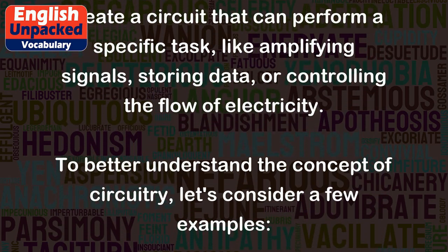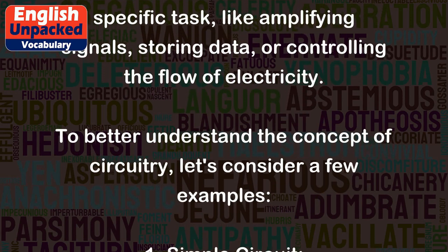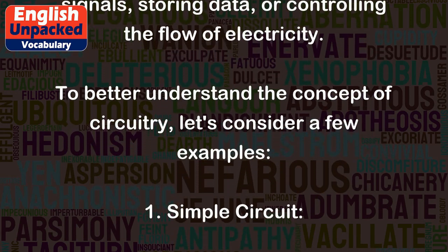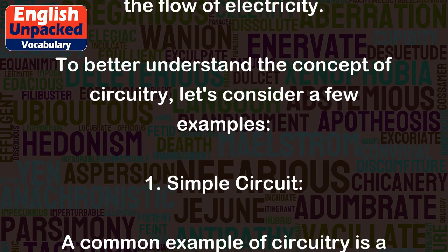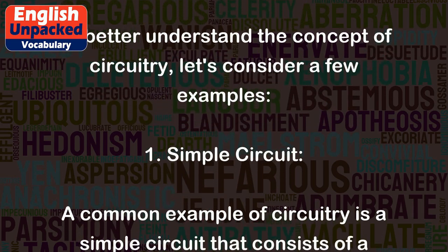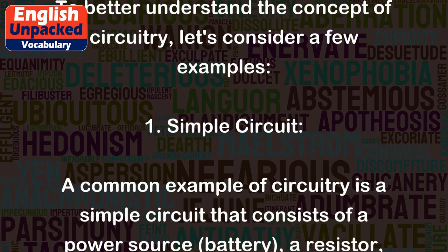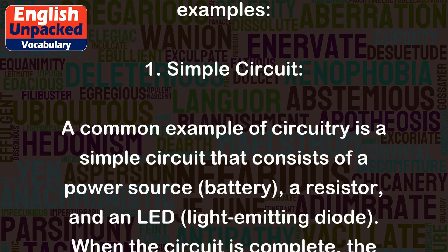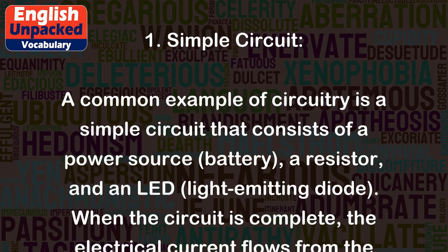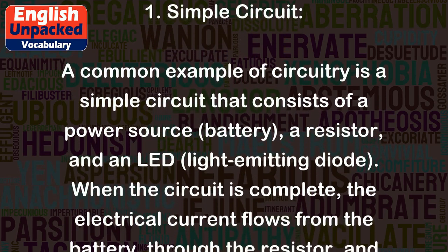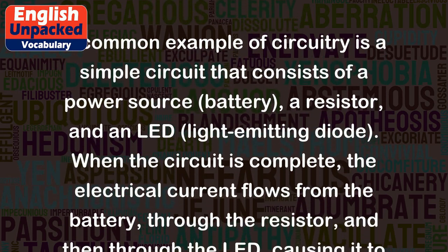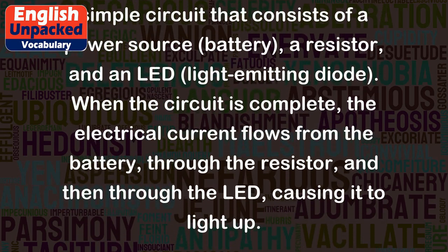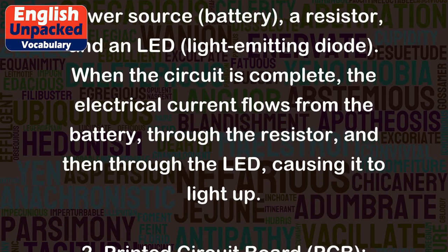To better understand the concept of circuitry, let's consider a few examples. First, a simple circuit: a common example is a simple circuit that consists of a power source (battery), a resistor, and an LED (light-emitting diode). When the circuit is complete, the electrical current flows from the battery, through the resistor, and then through the LED, causing it to light up.